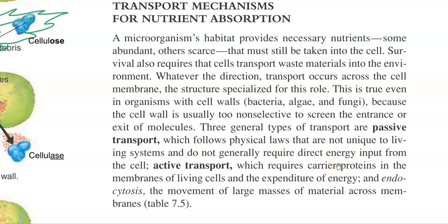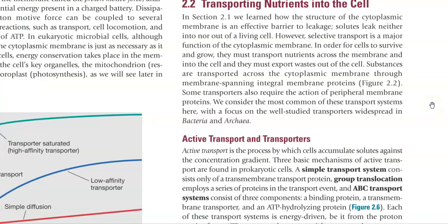Whatever direction the transport is happening, it needs to pass through the cell membrane, which plays a specialized role in the cell. Most organisms including bacteria, algae, and fungi are found to have a cell wall outside the cell membrane. The cell wall is not a highly selective one to screen the entrance and exit of molecules. Thus for survival and growth, nutrients need to be transported across the membrane into the cell, and waste must be exported out.